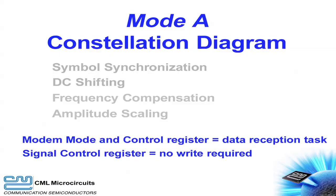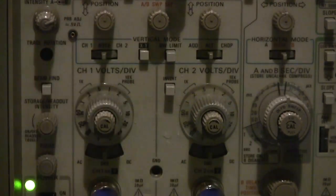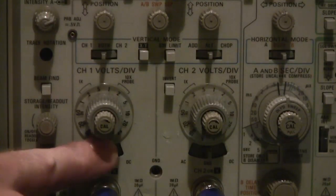There are four different ways to view a constellation diagram with the CMX 7163. In this video we will refer to them as modes A, B, C, and D. Each of these modes provides a different amount of processing on the received signal. In mode A, the received signal is filtered by the receiving CMX 7163 root raised cosine filters and presented on its transmit outputs. There is no symbol synchronization, no DC shifting, no frequency compensation, and no amplitude scaling in this image. This is the least processed of the four image types. The oscilloscope should be operated in XY mode and the input signals should be DC coupled to the scope.